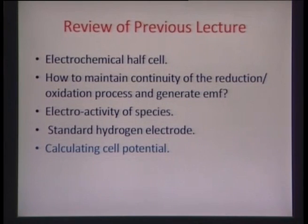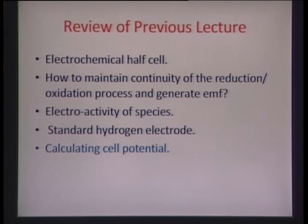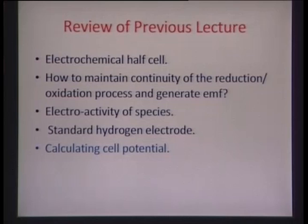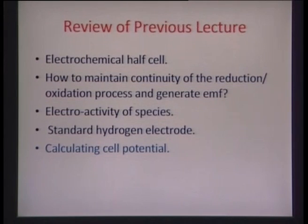We also talked about relative and absolute potentials and discussed the standard hydrogen electrode, which is essentially a platinum electrode dipped in a 1 molar HCl solution in water, forming hydronium ions H₃O⁺, where hydrogen was bubbled through at about 1 atmosphere pressure and the temperature was maintained at about 25 degrees Celsius.